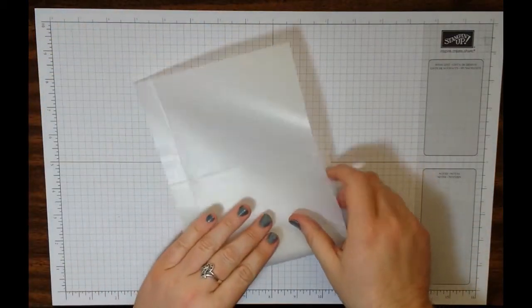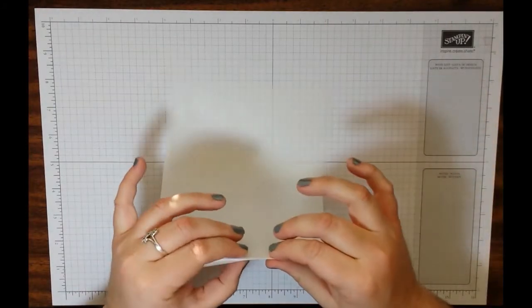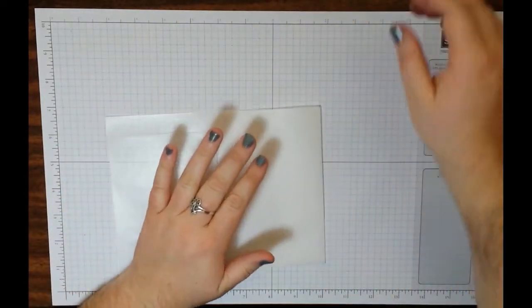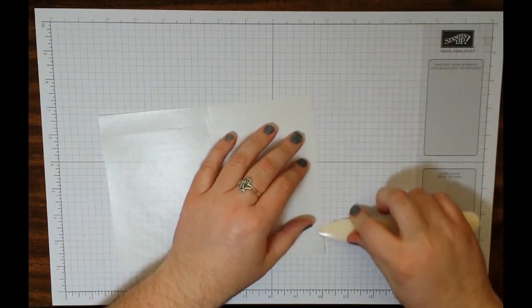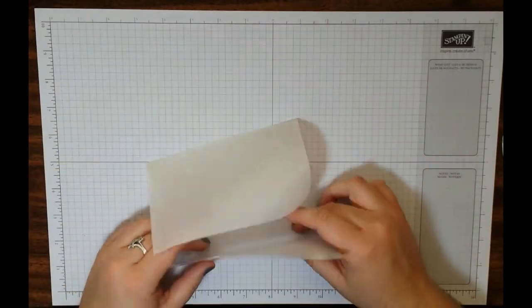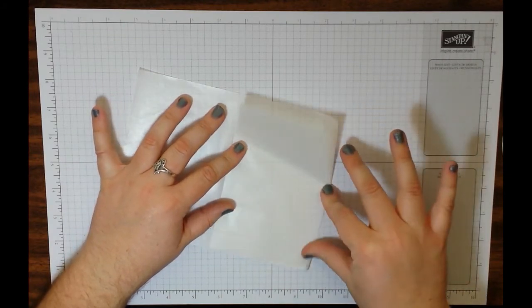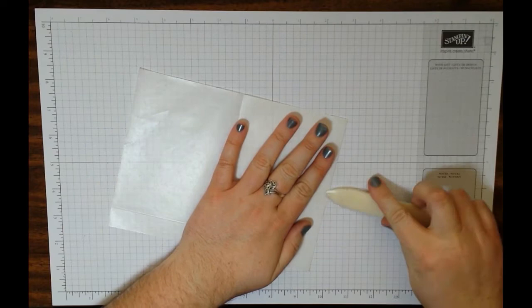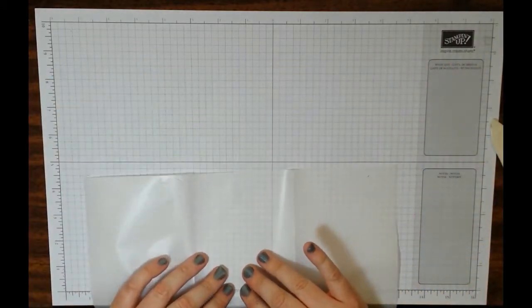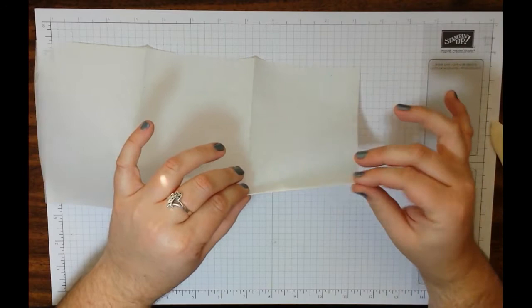You're now going to want to fold and burnish all of your score lines. And I would be careful. Make sure you can actually see your score line as you're folding it. It's hard for me to see with all the light going on here. And just burnish. I mean, this folds beautifully. It folds really nice. But you just need to make sure that you get it folded and burnished well. The second one's a little bit easier because you know it's the exact same size as your middle there. And the last piece is your bottom.